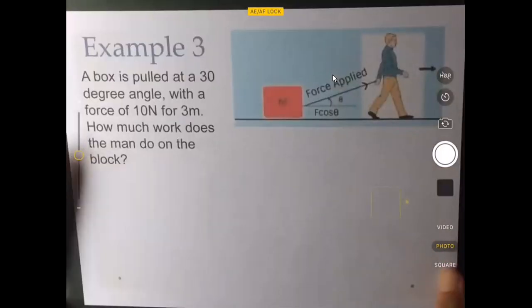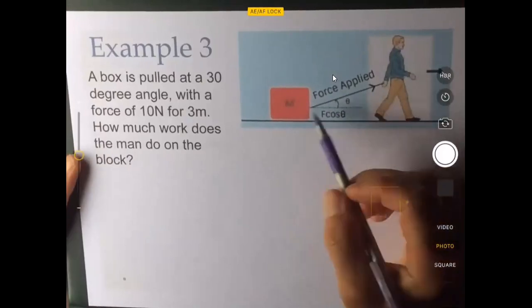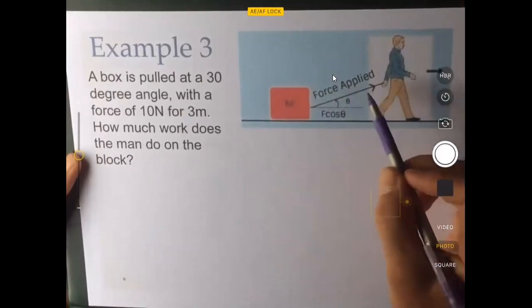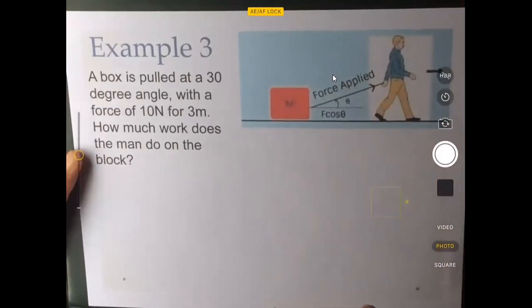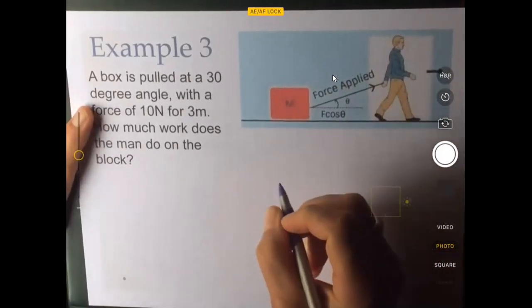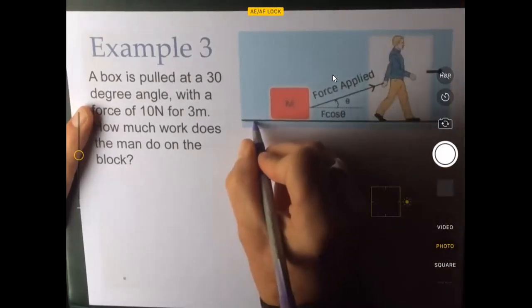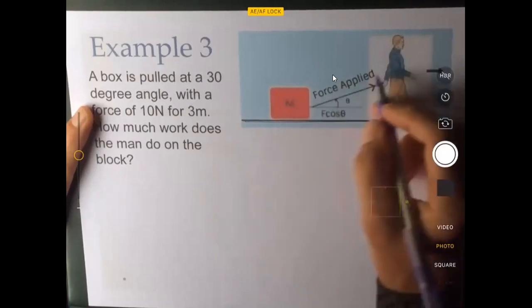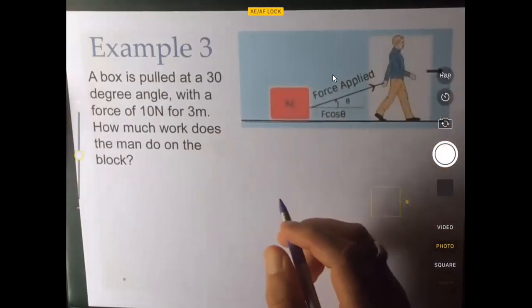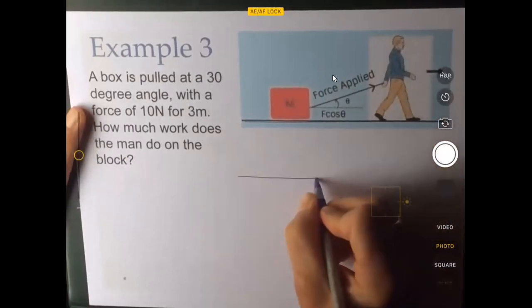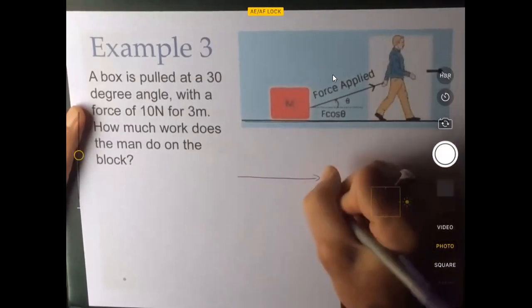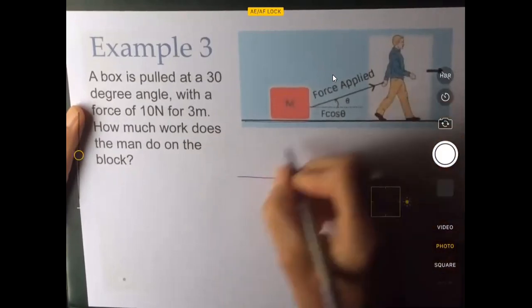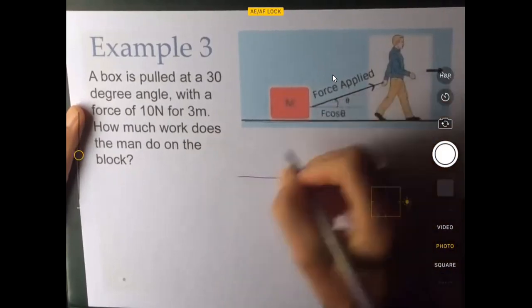Let's go to another example. Here we have somebody pulling on a box and let's say there's a rope here and the person's pulling at an angle. How much work do they do? Well, the box is going to move horizontally across the floor. The box isn't going to be flying up into the air. The person's just dragging it along. So the displacement is three meters to the right, but the force is exerted right along that rope.